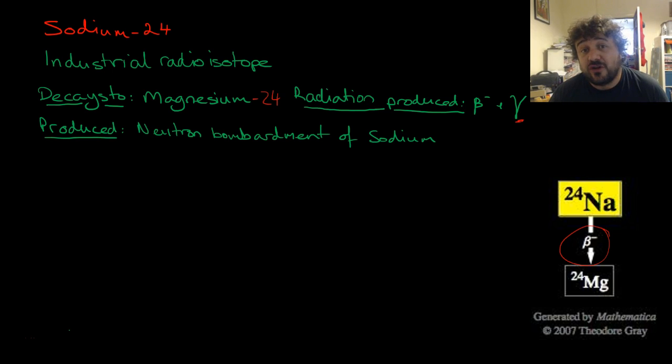It's produced through the neutron bombardment of sodium. Sodium is placed in the nuclear reactor. It hits neutrons, becomes unstable, and becomes sodium-24.